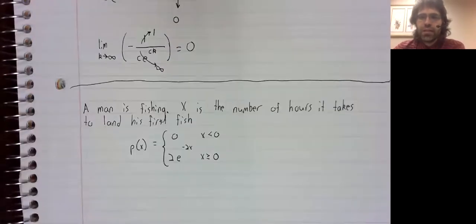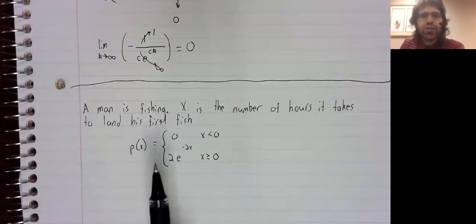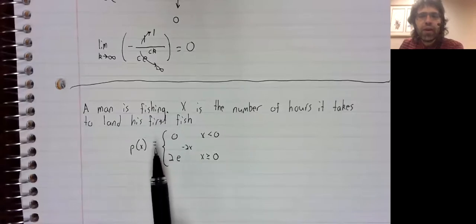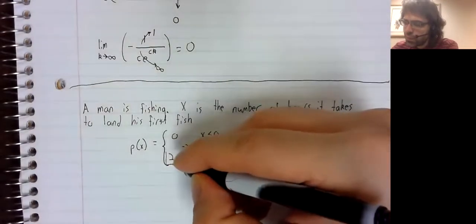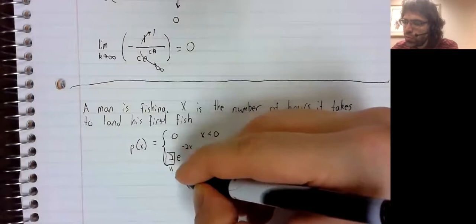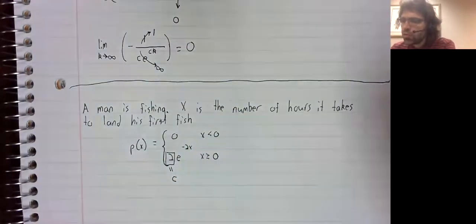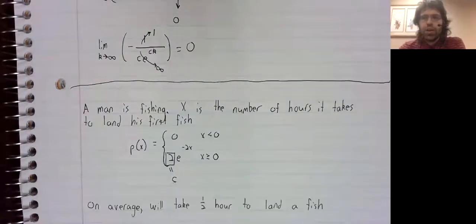Returning to an example we've looked at earlier. If you are fishing, and x is the number of hours it takes to land your first fish, you might expect to see a probability density function that looks something like this. This is our c. So, on average, you'd expect it to take about half an hour before you land a fish.